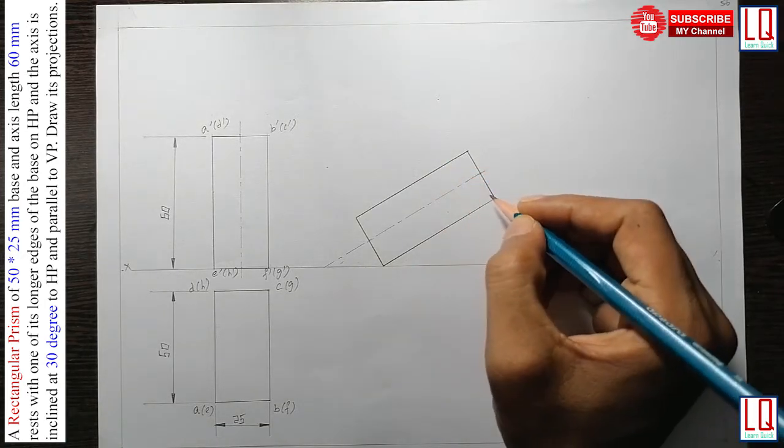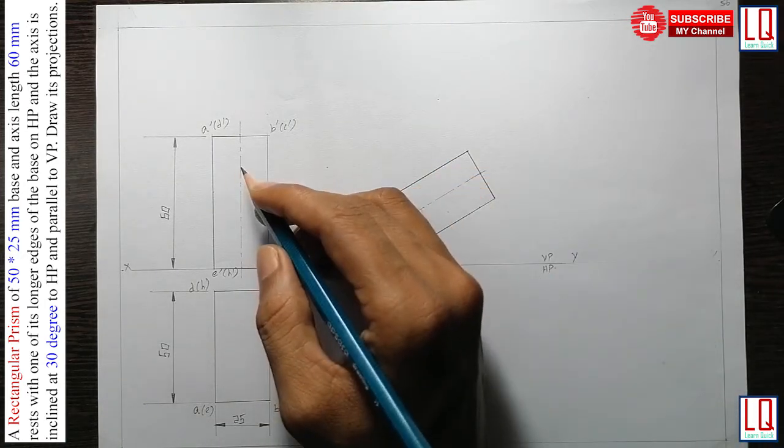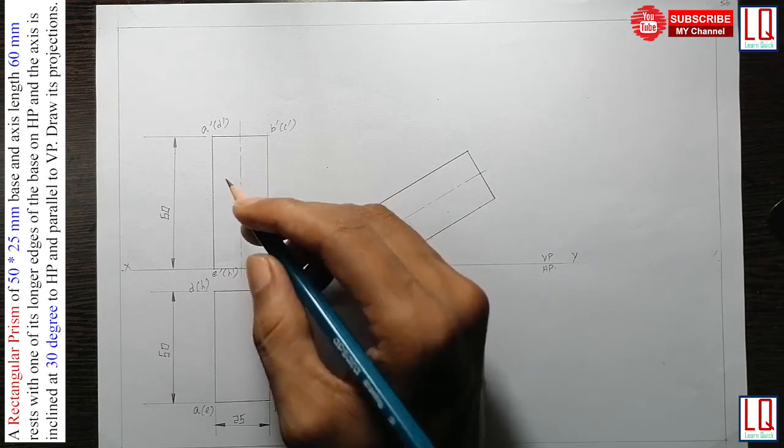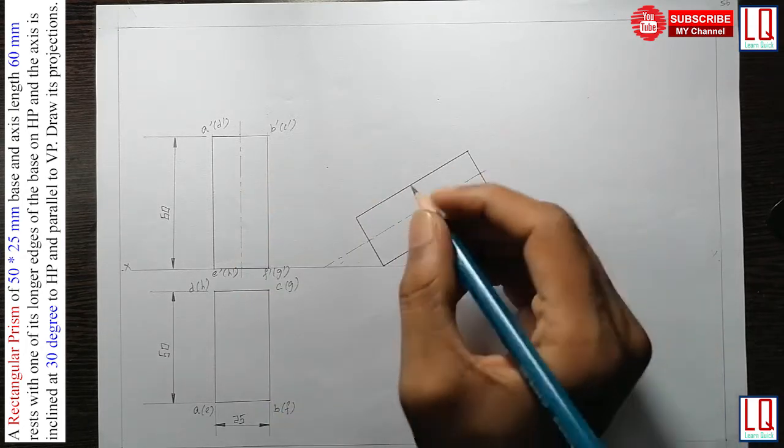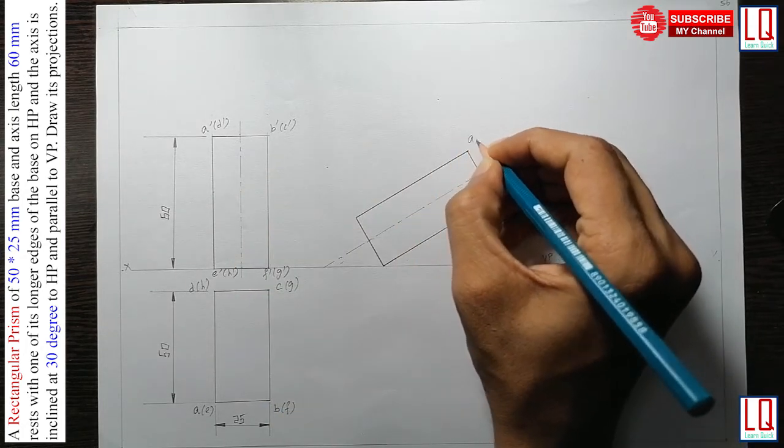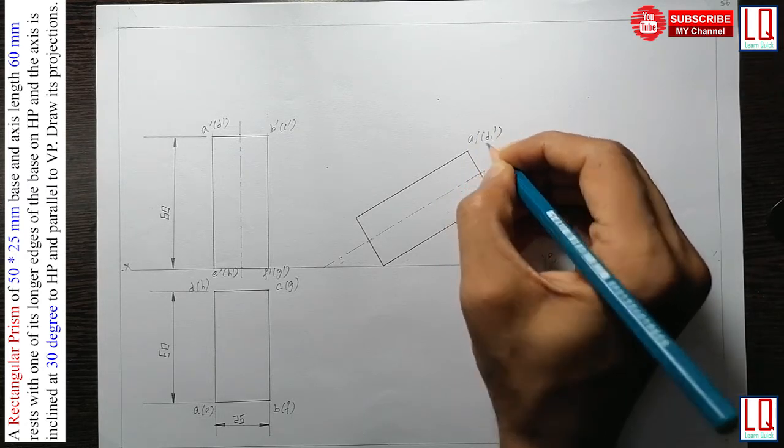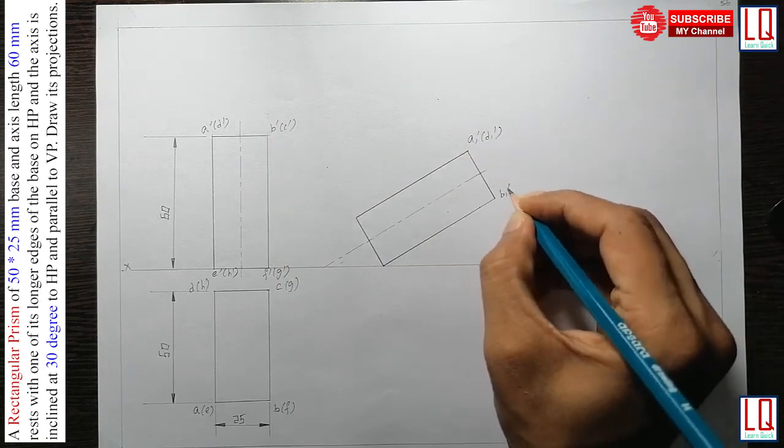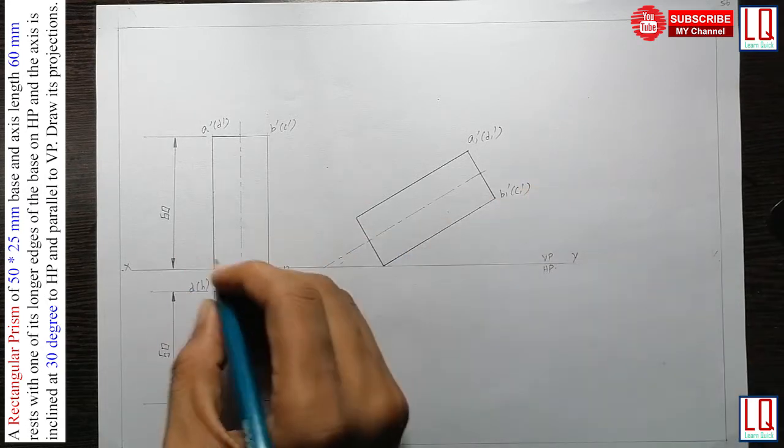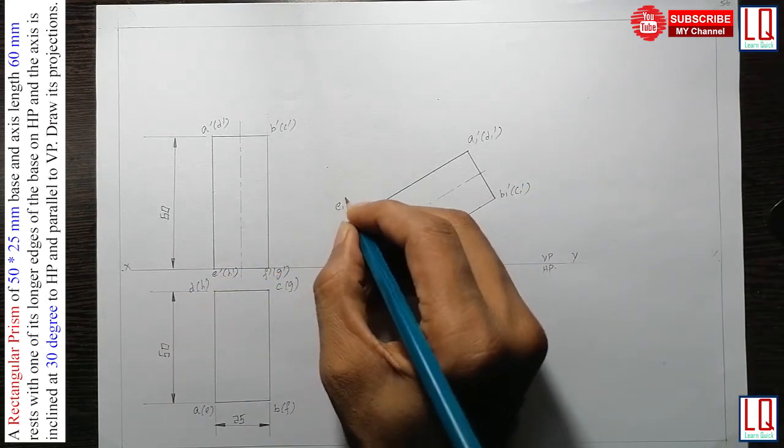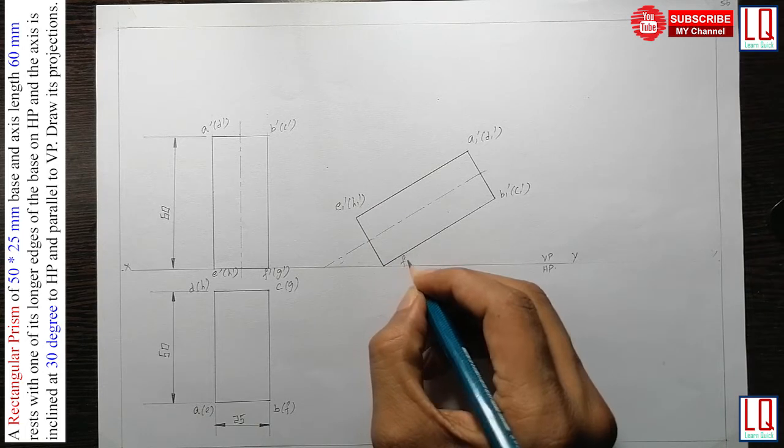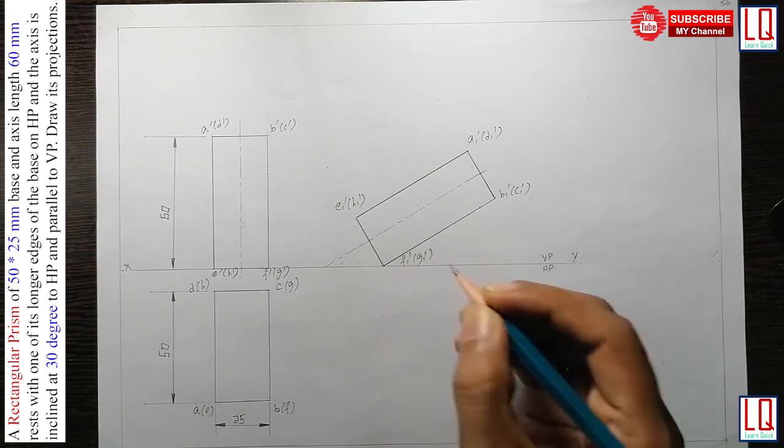We are going to quickly name the corners. We are going to transfer the letterings from the step 2 to step 3. So it's going to be A1 dash bracket D1 dash. So from here B1 dash bracket C1 dash. From here E1 dash bracket H1 dash F1 dash bracket G1 dash. Now step 3 is completed.